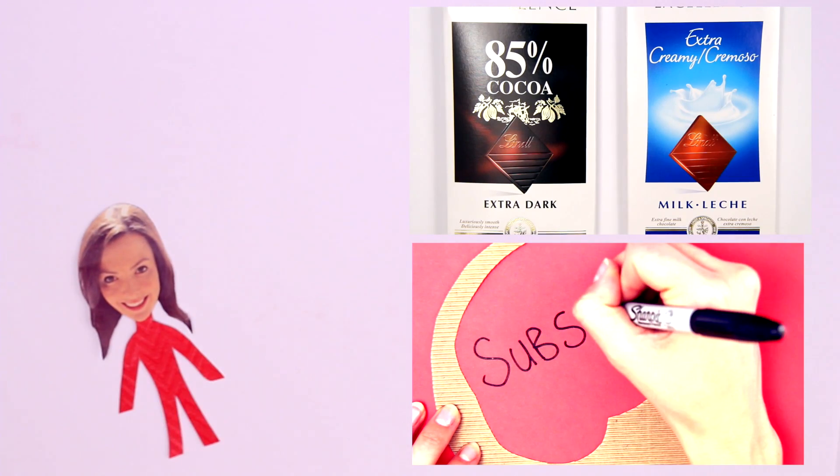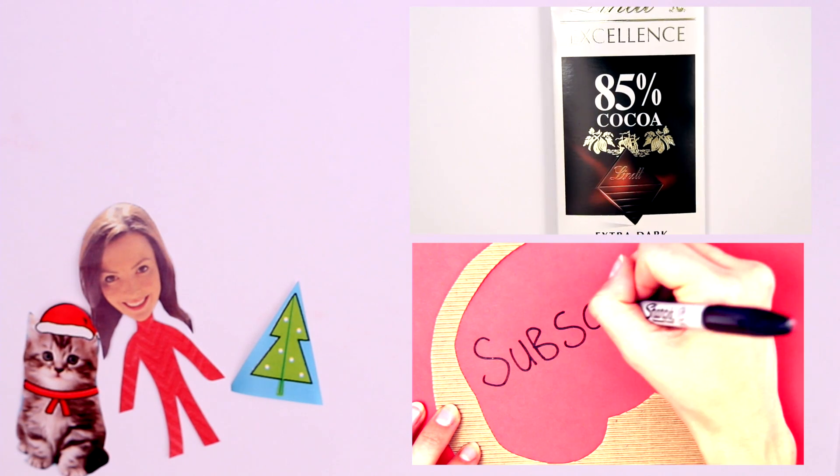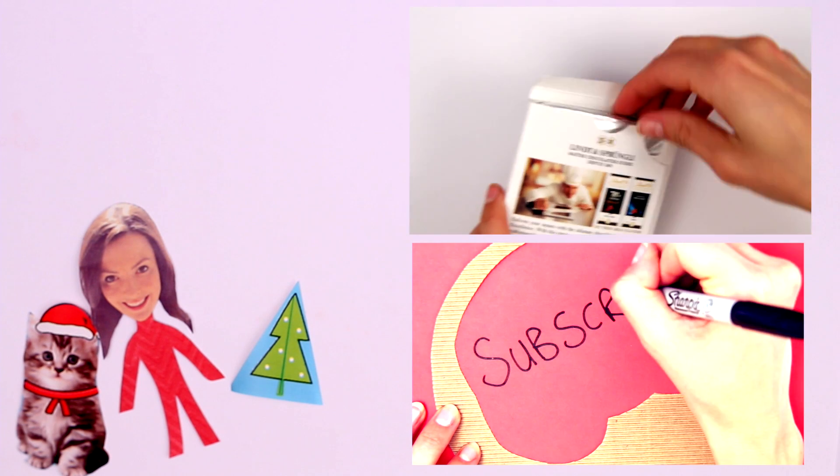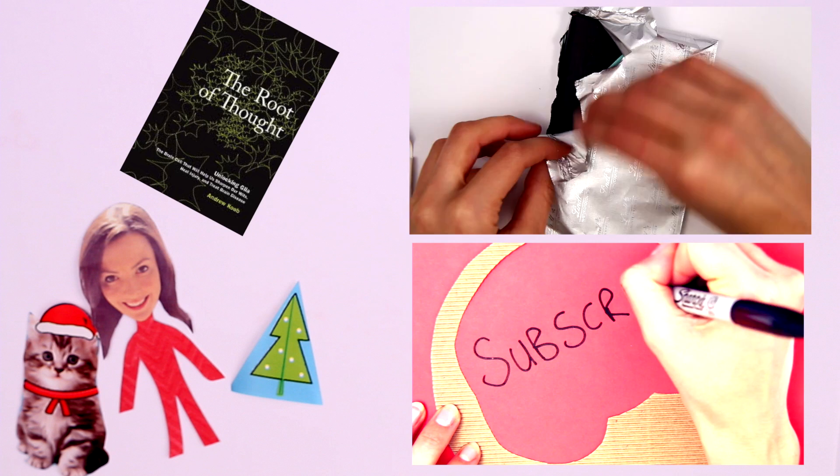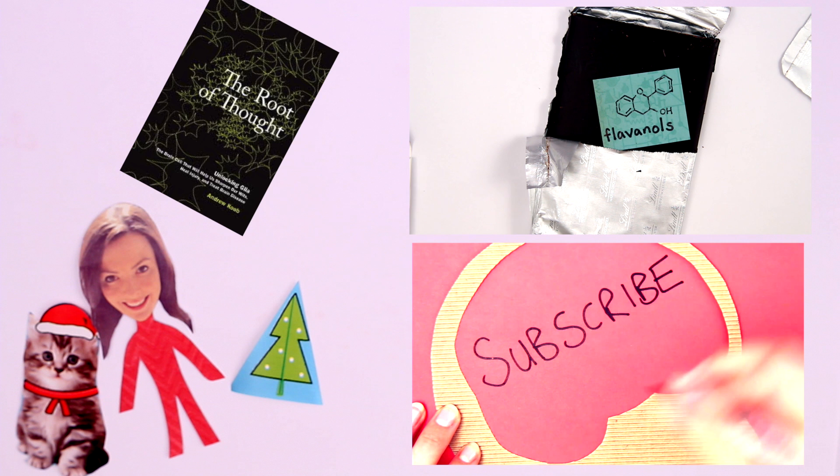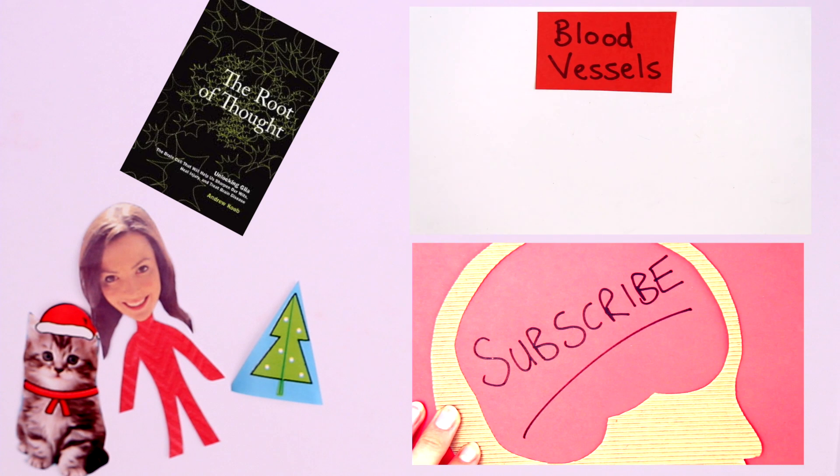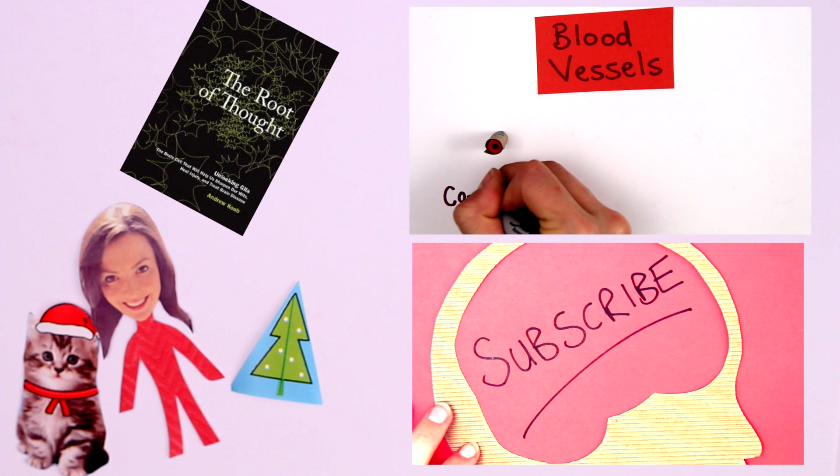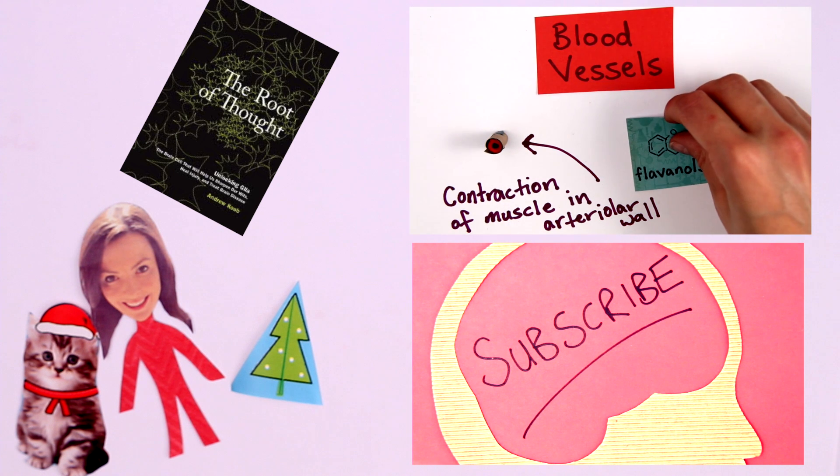I just wanted to pop in and say happy holidays. If you're looking for something to read over the break, this video was inspired by Andrew Koob's book The Root of Thought: Unlocking glia, the brain cell that will help us sharpen our wits, heal injury and treat brain disease. It's really interesting and his name spelled backwards is book, which is a wonderful anadrome like snoops and spoons or straw and warts. There's a link in the description.